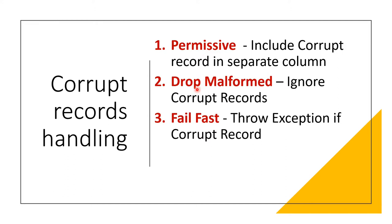The next method is drop malformed. In this method, when there is a corrupt record in the input file, it will just ignore or drop the corrupt records and the entire process will proceed further. So here also there is no impact to the overall process.